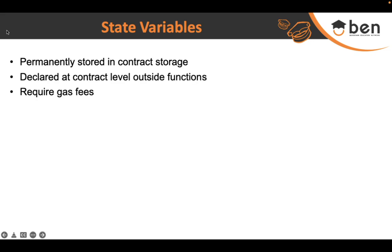State variables are declared at the contract level, outside the functions. The scope of variables defined inside functions is limited to those functions. Since we need something global and more permanent, we declare these variables outside the functions at the contract level.